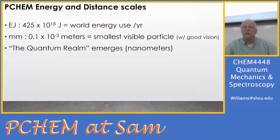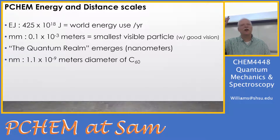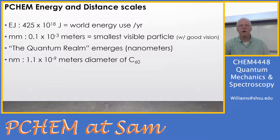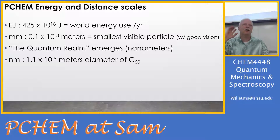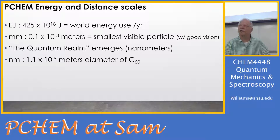We start to see things that can't be explained with Newtonian physics. In the nanometer range — about 1.1 nanometers is the diameter of a C60, like a little soccer ball of carbon — quantum effects emerge. That means vibration, translation, and rotation are quantized, meaning there are only certain energies that an electron, atom, or molecule can have. Why can an electron only have certain energies?